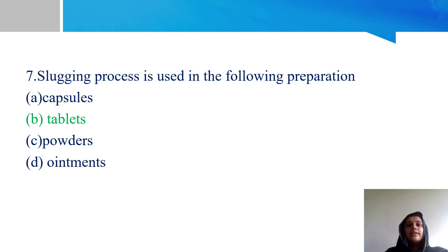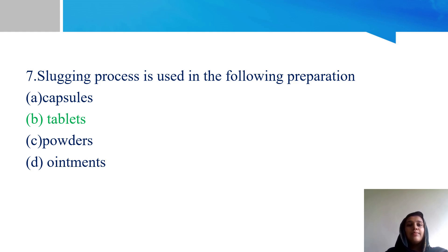In the dry granulation method, the powder is compressed in a tablet compression machine to make a slug formation. The slug is then milled to make granules, which is the dry granulation process. Slugging is used in the preparation of tablets using the dry granulation method.